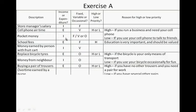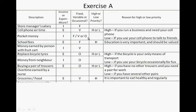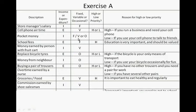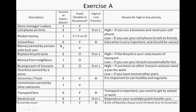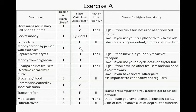Pocket money is an income. It depends on your family — it can be fixed, variable, or occasional. Some people get a fixed amount, others get variable amounts, and some only get pocket money occasionally. School fees are an expenditure — fixed and high priority because education is very important. Money earned by a person with a fruit cart is an income and it is variable because it depends on the amount of fruit sold.